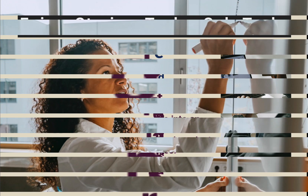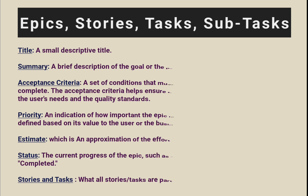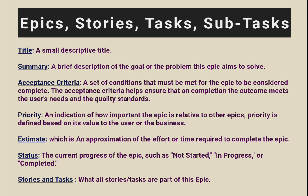Typically, an epic should include the following information. Title: a short descriptive title. Summary: a brief description about the goal of the epic or the problem this epic aims to solve. Third, acceptance criteria: a set of conditions that must be met for the epic to be considered complete. The acceptance criteria helps ensure that on completion the outcome meets the user's needs and quality standards.